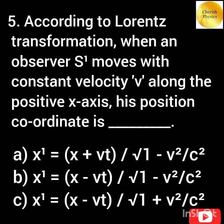According to Lorentz transformation, when an observer s prime moves with constant velocity v along the positive x-axis, his position coordinate is.